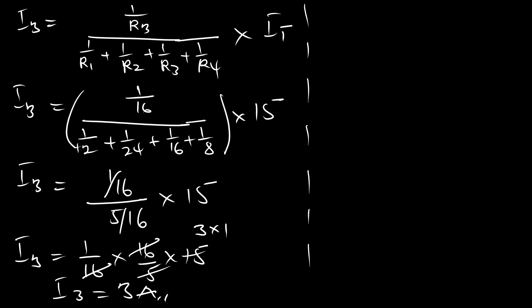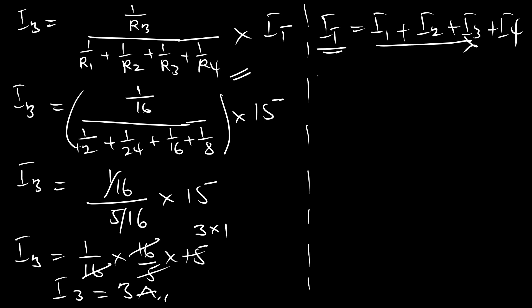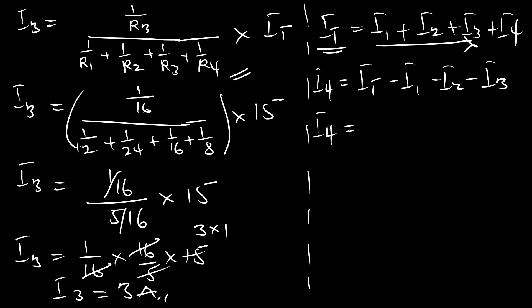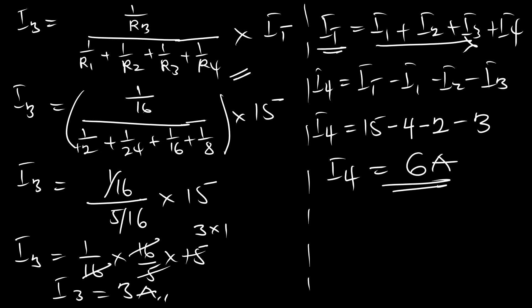We now have I1, I2, and I3. For I4 we can use IT = I1 + I2 + I3 + I4, so I4 = IT − I1 − I2 − I3 = 15 − 4 − 2 − 3 = 6 amperes. This concludes the current divider rule for three or more resistors. Thank you for watching — please subscribe to the channel, like the video, and drop your comments.